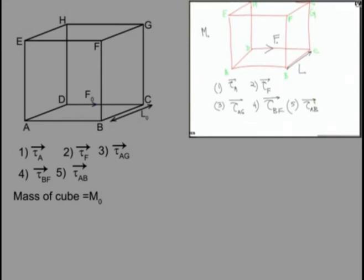If we go by the simpler definition — torque about a point equals force times perpendicular distance — we can get one or two answers very easily. The line of action of the force is along DC. The perpendicular distance of point A from this line of action is L₀. So very easily, the torque magnitude is F₀ times L₀. This is the answer to the first part. What is the direction? Minus J-cap.